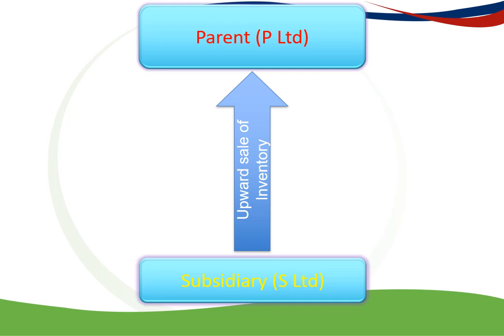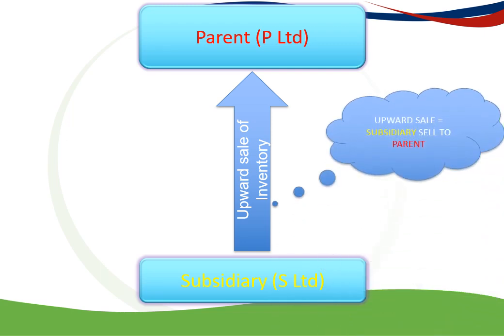In this video, we will look at an upward sale — when a subsidiary is selling inventory to a parent. An upward sale is when the subsidiary sells to the parent. Make sure you identify who is selling to whom, because the journals are a little bit different. When it's an upward sale, NCI is affected, and when it's a downward sale, NCI is not affected.